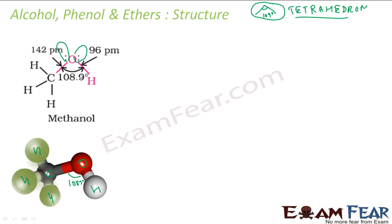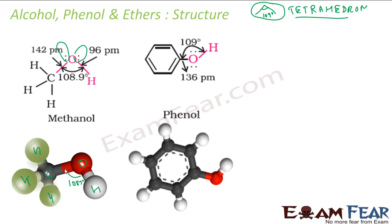The unshared lone pair of electrons of oxygen will pull the OH and OC bonds, and the angle will be slightly less than 109 degrees. This is the structure of methanol — 108.9 degrees. This is the typical structure of alcohol. The angle is slightly less than the tetrahedral angle because of the repulsion by the lone pair electrons of oxygen. Here the carbon is sp3 hybridized.